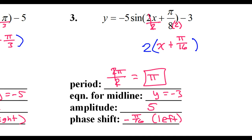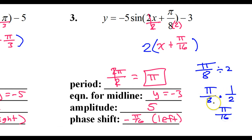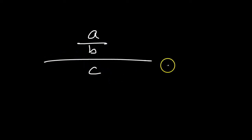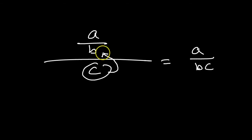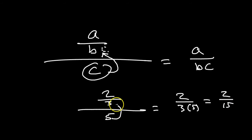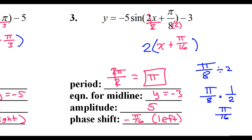Here's the shortcut I'm using: if you have a/b and you divide by c, that equals a over bc — the extra thing you're dividing by just joins the denominator. So if I have 2/3 divided by 5, that's the same as 2/(3×5), which is 2/15. It just comes up and multiplies in the denominator.